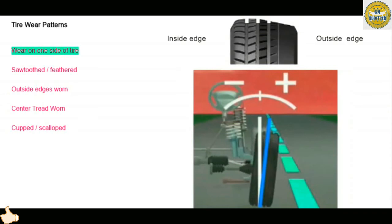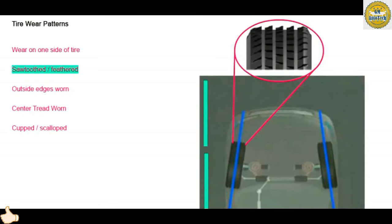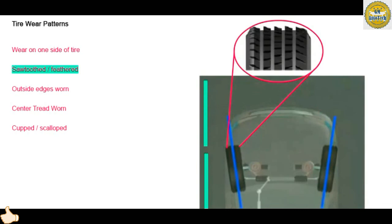Some tires may exhibit a sawtooth or feathered wear pattern on the tread. If so, the front or rear toe may be out of adjustment. If the high spots of the tread face toward the center of the vehicle, this indicates excessive toe in. If the high spots of the tread face away from the center of the vehicle, it indicates excessive toe out.